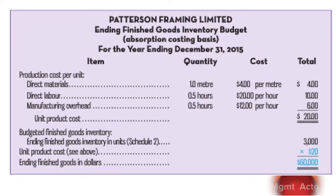Let's finish up the final budgets. Here's the ending finished goods inventory budget. A logical question is: why did we wait till now to do it? Why do all the other budgets first? We knew what our ending inventory would be — 3,000 units — why didn't we just do it? Because we need a cost per unit: how much did it cost us to make one unit of inventory?